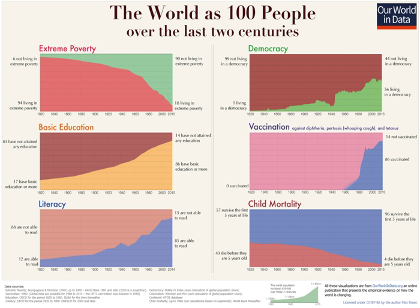Food provision, the growth and distribution of incomes, violence, rights, wars, culture, energy use, education, and environmental changes are empirically analyzed and visualized in this web publication.